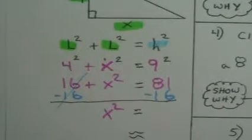And 81 minus 16. If you can't do it in your head, go ahead and borrow. That's a seven, that's an 11. 11 minus 6 is 5, 7 minus 1 is 6. So 65.